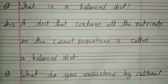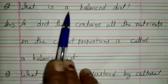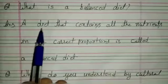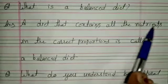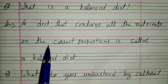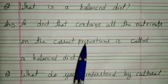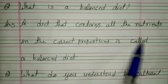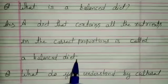Next question is what is a balanced diet? Answer is a diet that contains all the nutrients in the correct proportions is called a balanced diet.